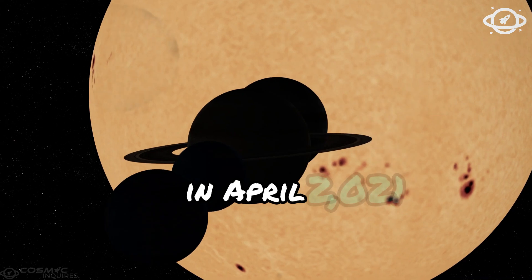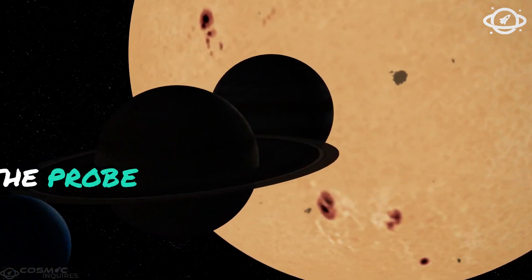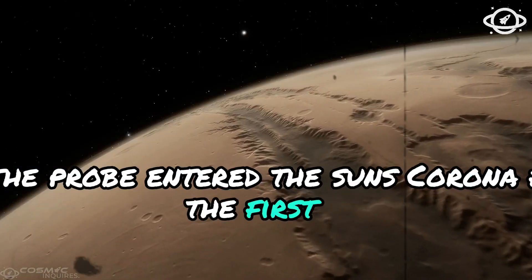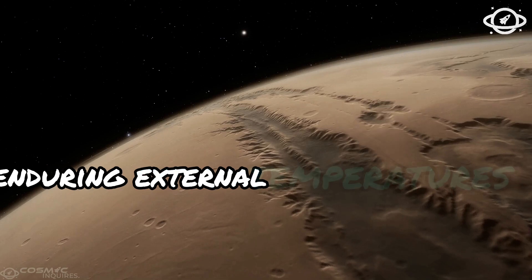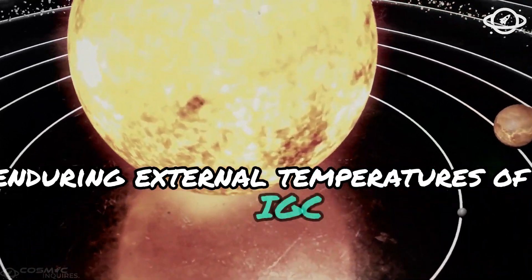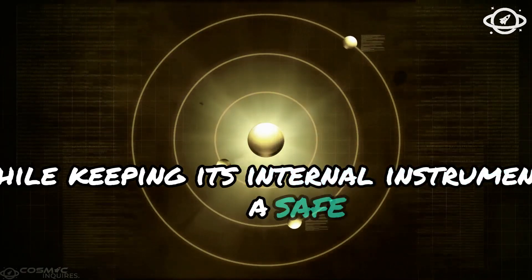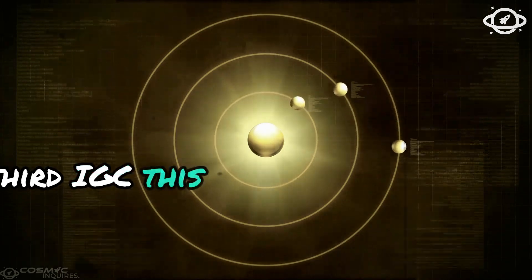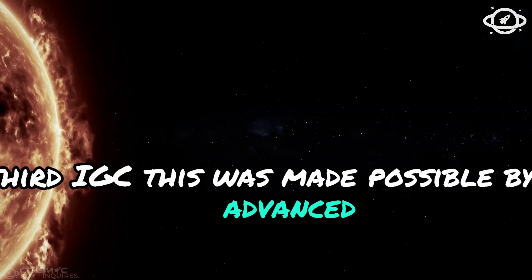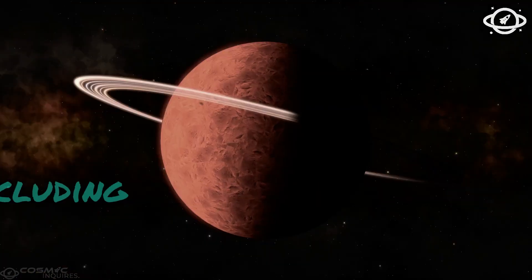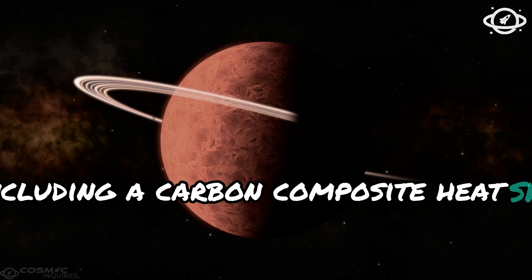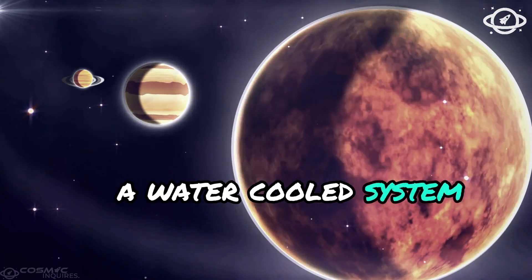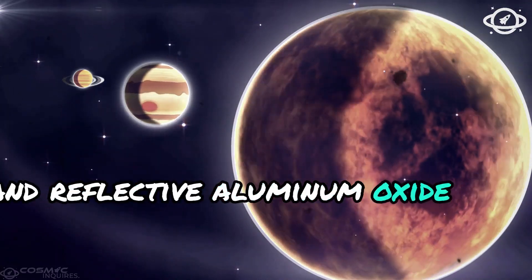In April 2021, the probe entered the Sun's corona for the first time, enduring external temperatures of 2,500 degrees Celsius, while keeping its internal instruments at a safe 30 degrees Celsius. This was made possible by an advanced thermal protection system, including a carbon composite heat shield, a water-cooled system, and reflective aluminum oxide coatings.